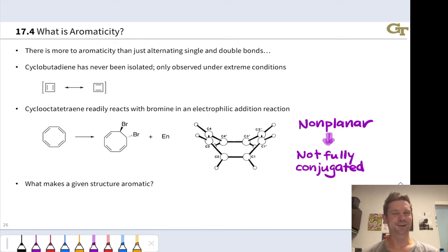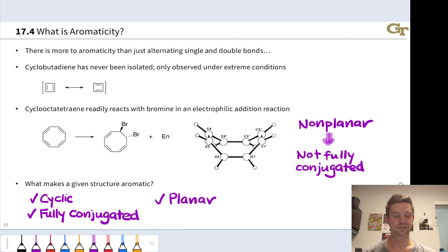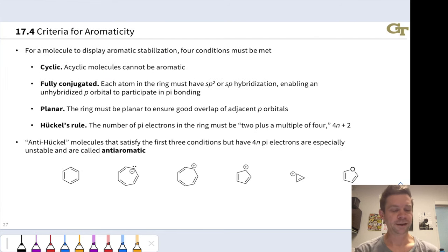What then does make a given structure aromatic? It is necessary for the structure to be cyclic and for it to be planar. It's also necessary that each atom is sp2 or sp hybridized. This leads to full conjugation, complete conjugation, contiguous overlap of p orbitals around the ring. These are three important conditions, but they're not the only three conditions, and cyclobutadiene tells us this. Cyclobutadiene is absolutely planar, cyclic, fully conjugated, but it is not aromatic. It's very unstable rather than stable.